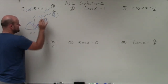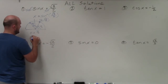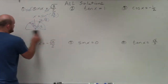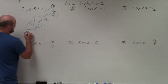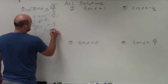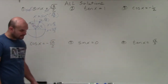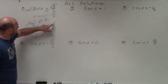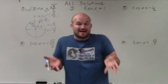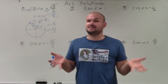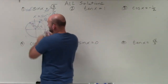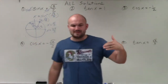So we have two solutions: x can equal pi over 3 and x can equal 2 pi over 3. If you take the sine of pi over 3, you get square root of 3 over 2. If you take the sine of 2 pi over 3, you get square root of 3 over 2. But they're not asking us to find solutions between 0 and 2 pi — they're asking for all solutions. We have two angles, and we can always add coterminal angles.